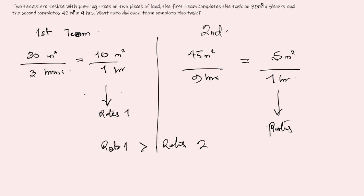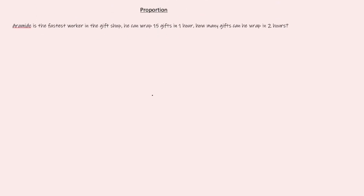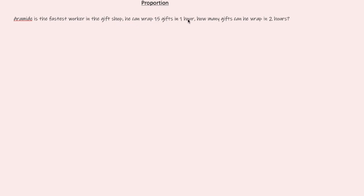Rates allow us to compare. If you are offered two jobs — one paying $15 per hour and another paying $25 or $30 per hour — you can tell the second pays more per unit of time. That leads us to proportion. Proportion is simply an equation of ratios. For example: Aramide can wrap 15 gifts in one hour — how many gifts can he wrap in two hours?